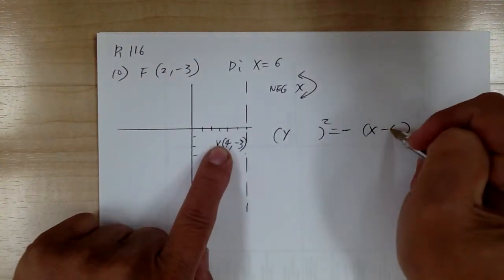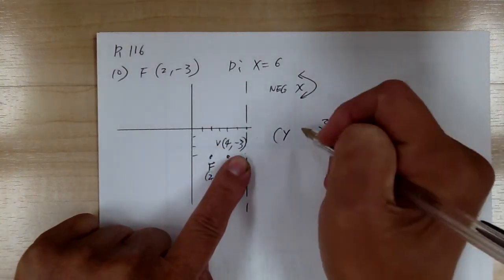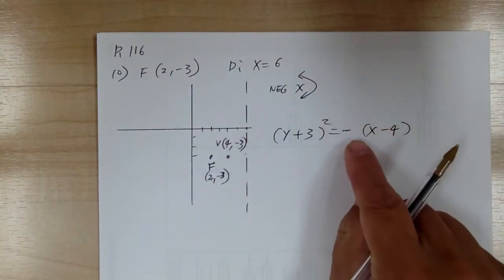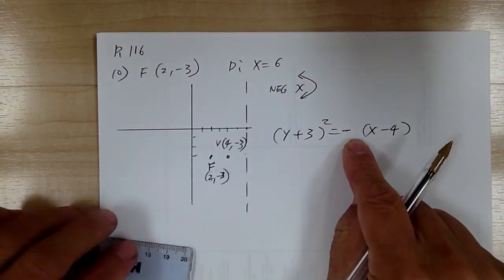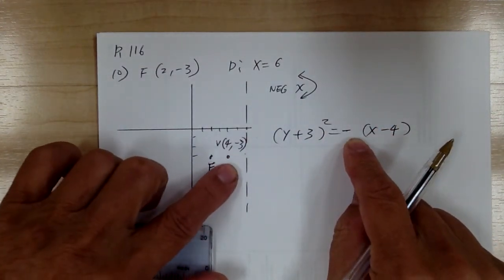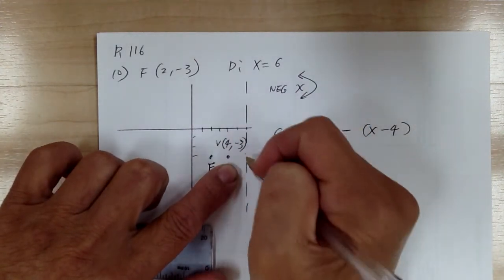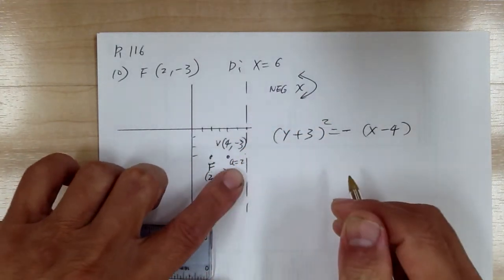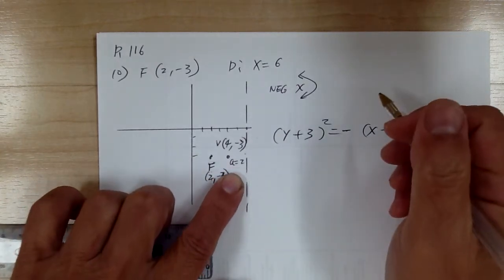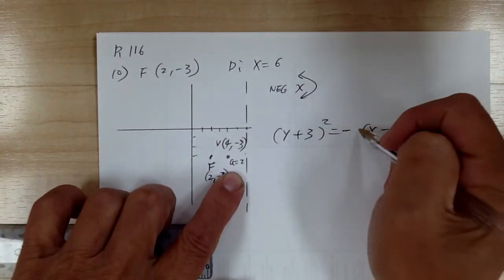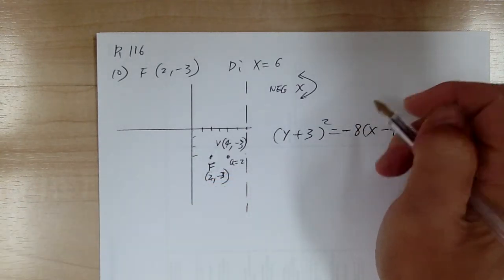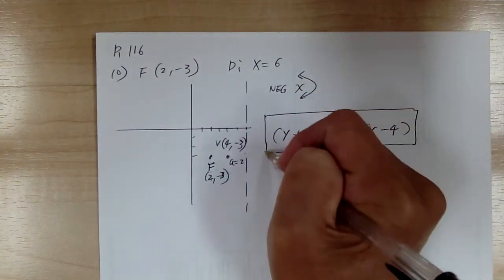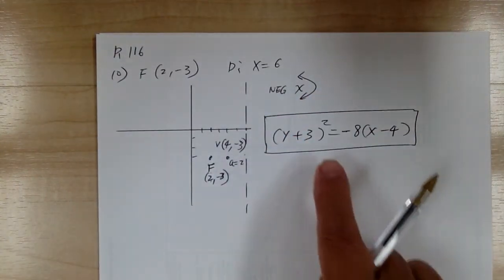So you're going to have x minus 4, and y minus negative 3 gives you plus 3. Next figure out your 4a — from the picture you can see that a equals 2. So 4a equals 8, and therefore that's the answer for number 10.